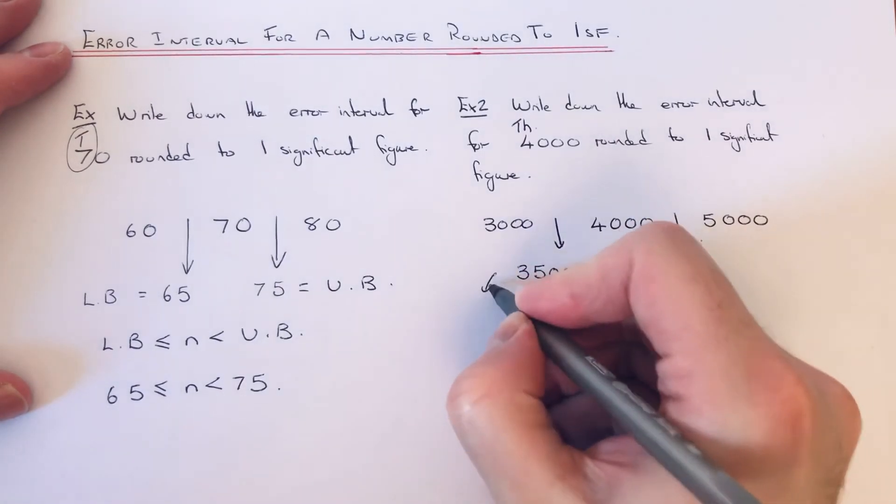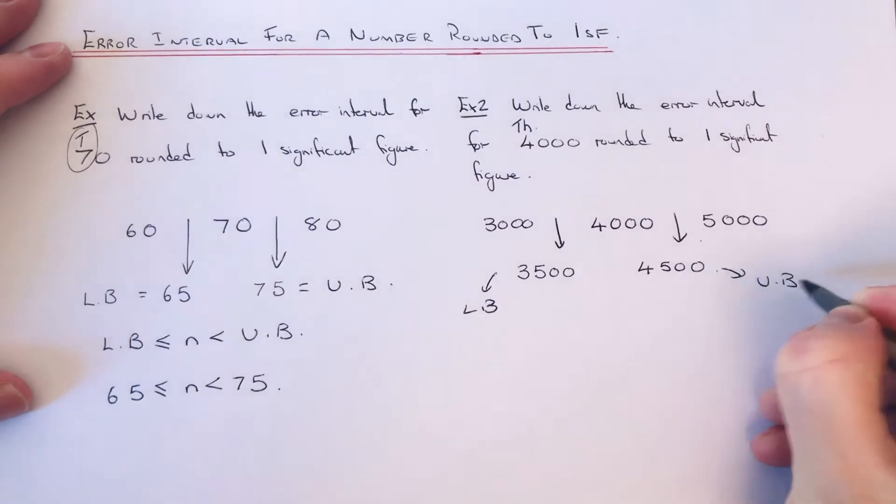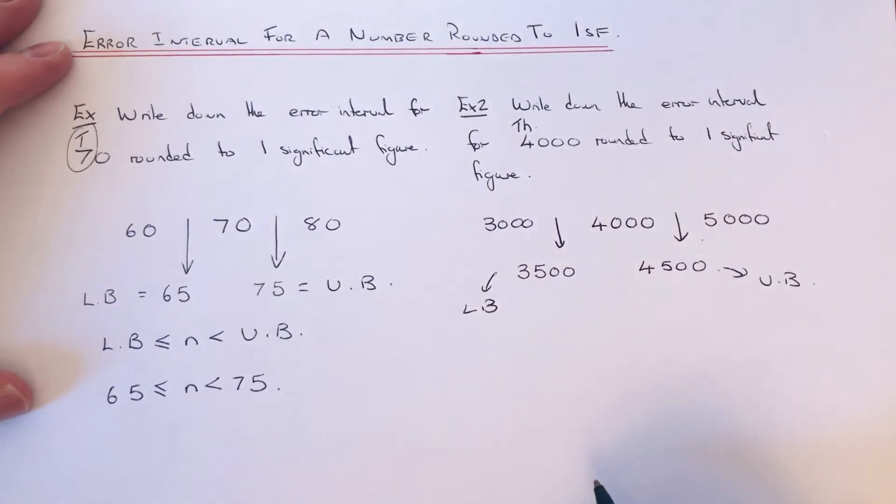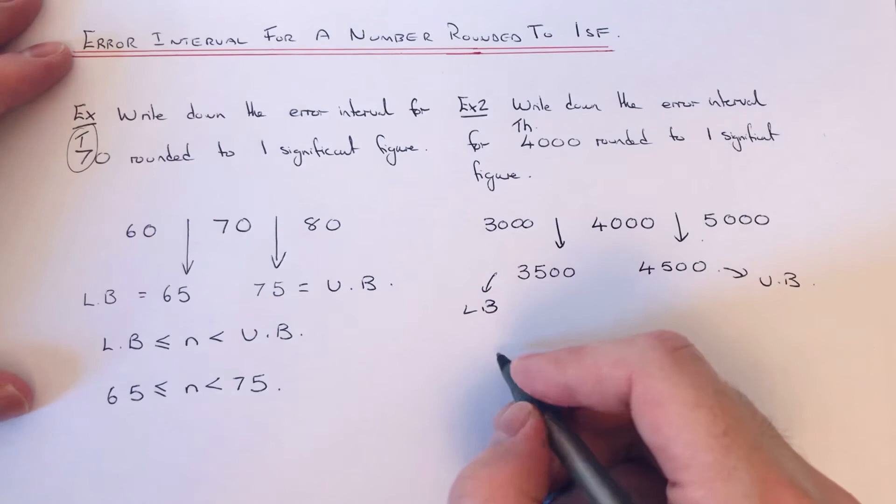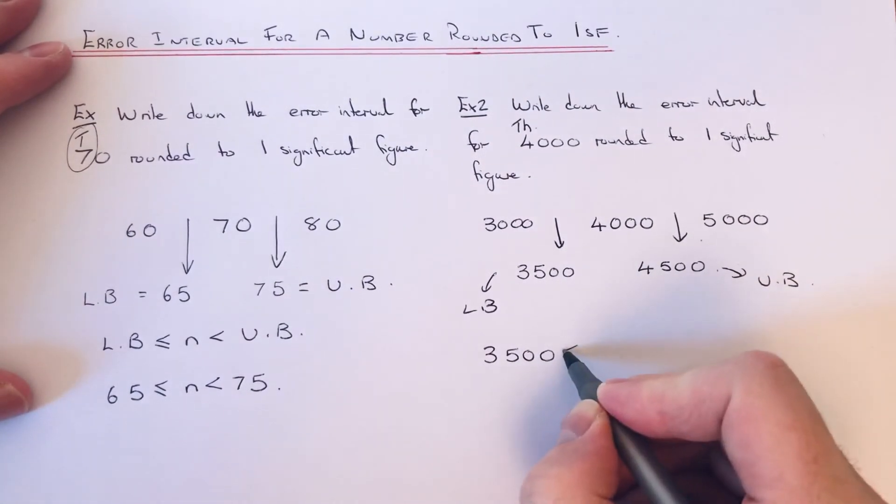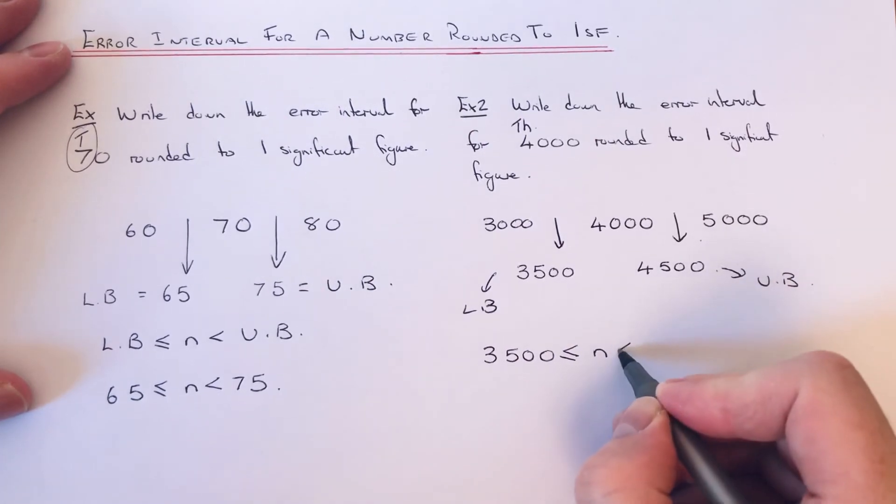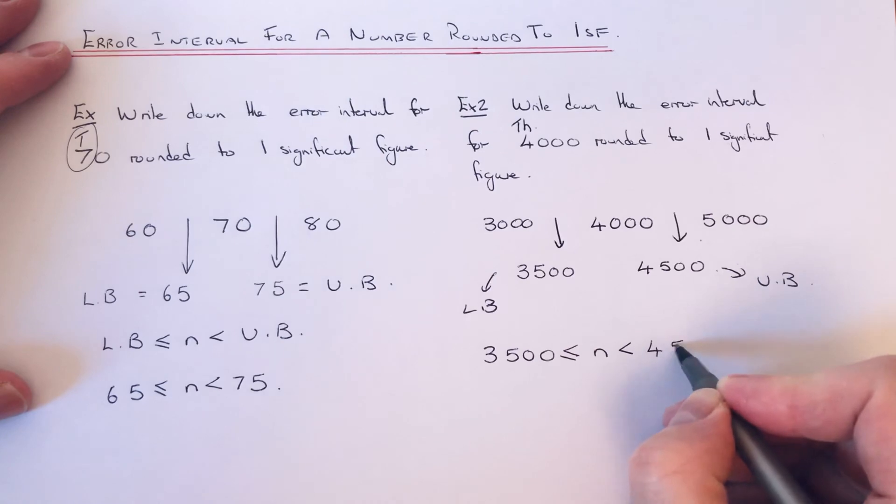So again, this is our lower bound and this is our upper bound. To get the error interval, we put the lower bound first, which is 3,500, then you put a less than or equal to sign, then you put the letter N, and then you put the upper bound at the end.